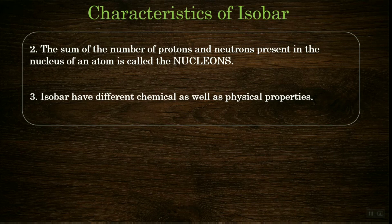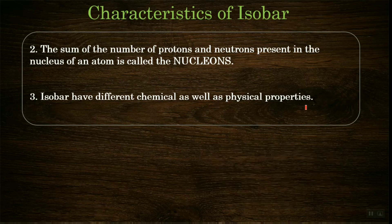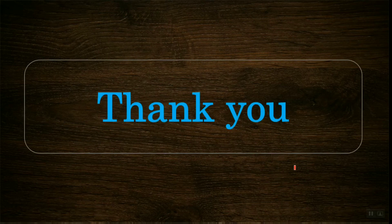Isobars have different chemical as well as physical properties because the number of electrons is not the same, the number of protons is not the same, and the number of neutrons is also not the same. Therefore, both chemical and physical properties are different in isobars. Thank you, dear students.